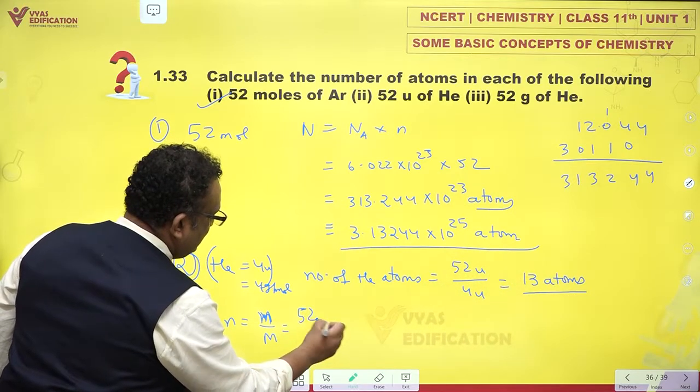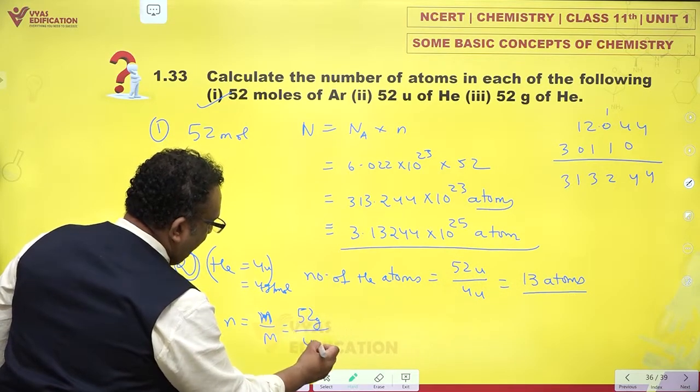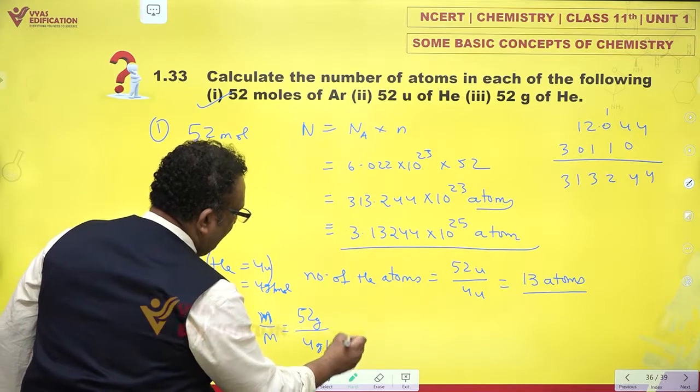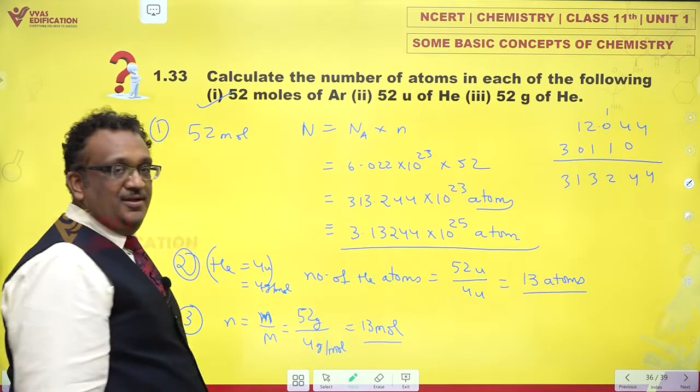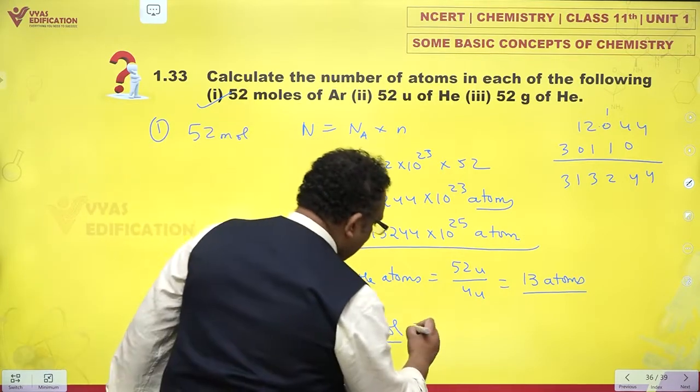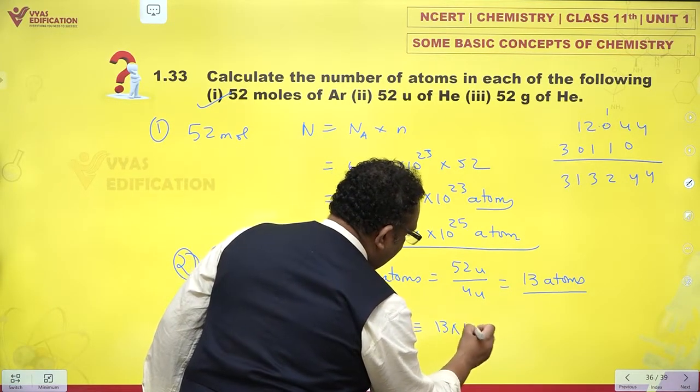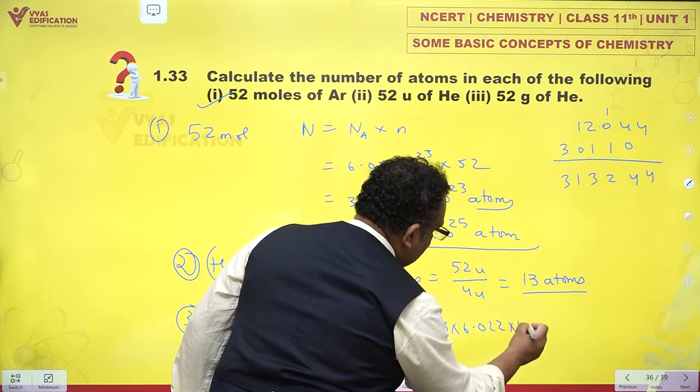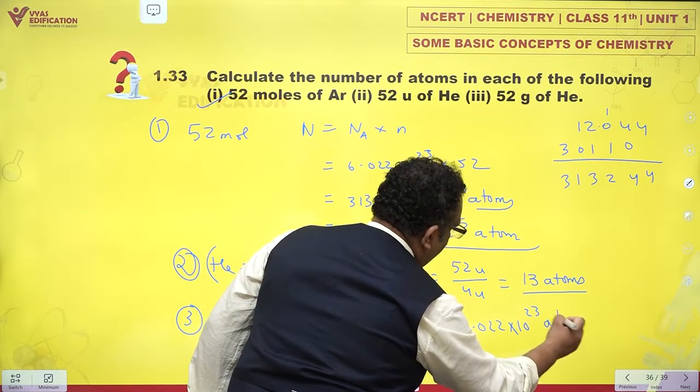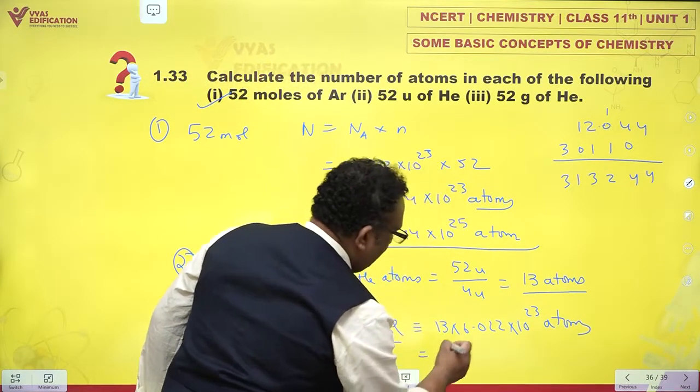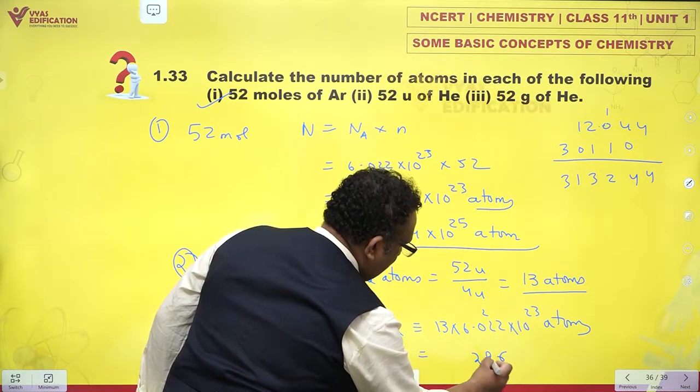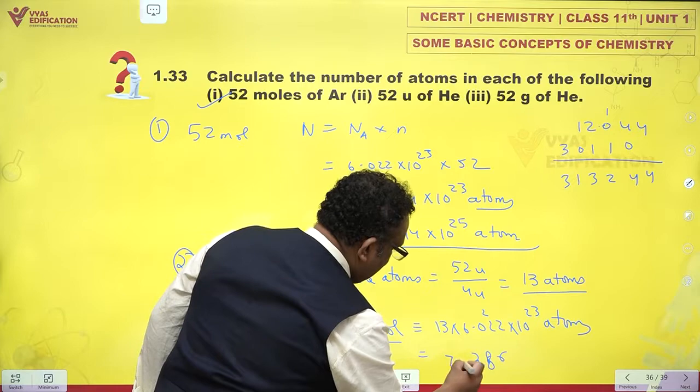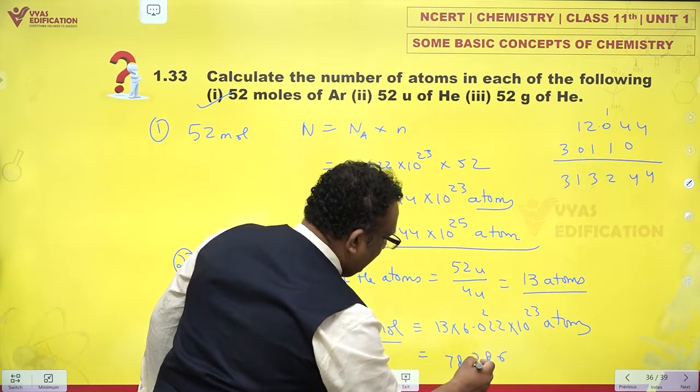So I have 13 moles of helium which is 13 times 6.022 × 10^23 atoms. 13 times 6 is 78, so I get 78.286 × 10^23 atoms.